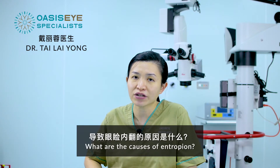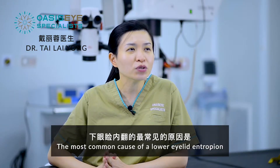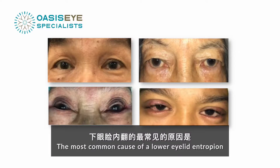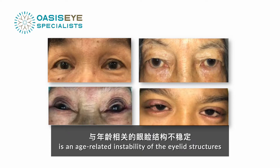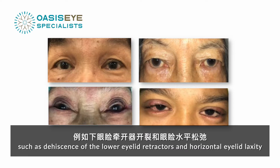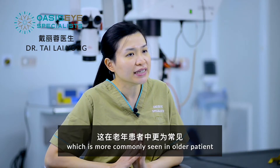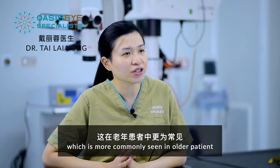What are the causes of entropion? The most common cause of lower eyelid entropion is age-related instability of the eyelid structure, such as dehiscence of the lower eyelid retractor and horizontal eyelid laxity, which is more commonly seen in older patients.